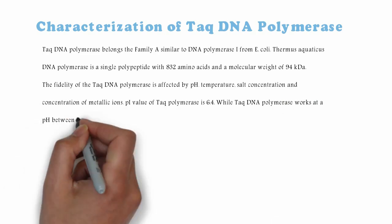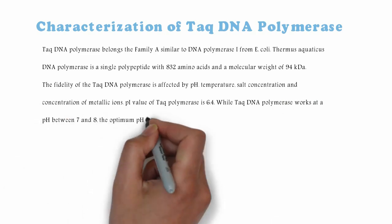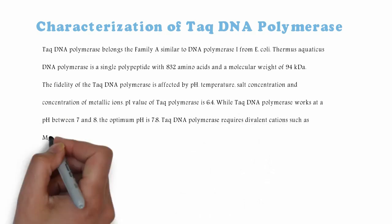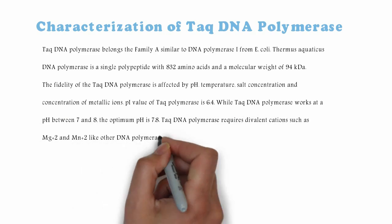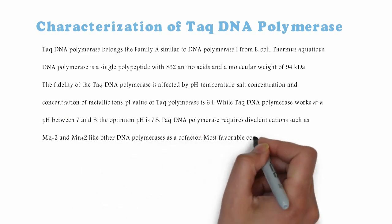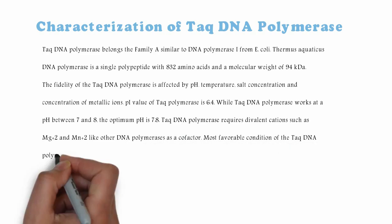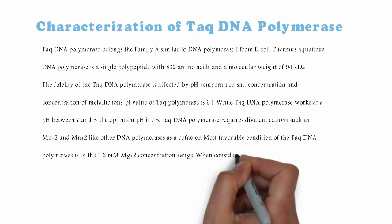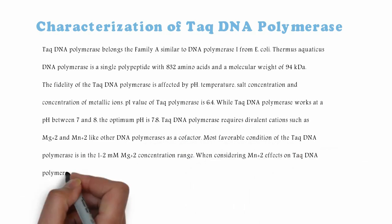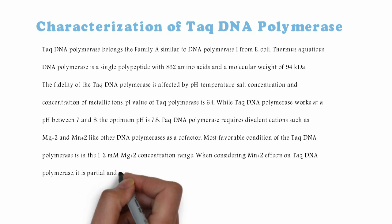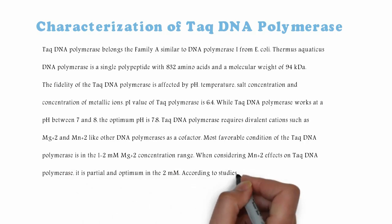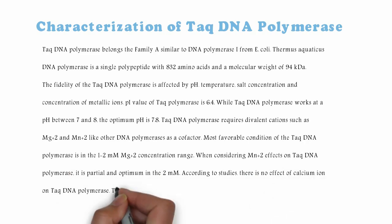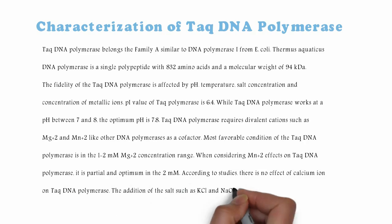Taq DNA Polymerase works at a pH between 7 and 8, with an optimum pH of 7.8. Taq DNA Polymerase requires divalent cations such as Mg²⁺ and Mn²⁺ as cofactors, like other DNA polymerases. The most favorable condition for Taq DNA Polymerase is in the 1 to 2 mM Mg²⁺ concentration range. For Mn²⁺, its effect is partial and optimum at 2 mM. Studies show there is no effect of calcium ions on Taq DNA Polymerase.